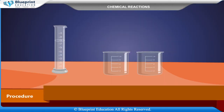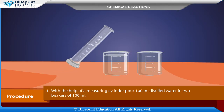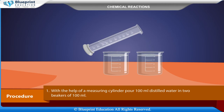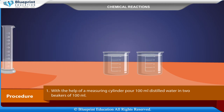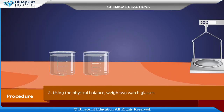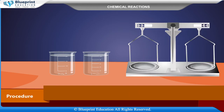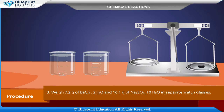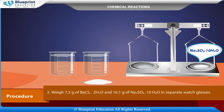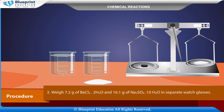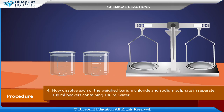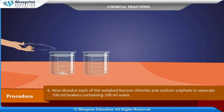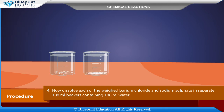Procedure: With the help of a measuring cylinder, pour 100 ml of distilled water into 2 beakers of 100 ml. Using the physical balance, weigh 2 watch glasses. Weigh 7.2 grams of barium chloride and 16.1 grams of sodium sulfate in separate watch glasses. Now dissolve each of the weighed chemicals in separate 100 ml beakers containing 100 ml water.